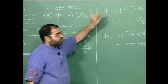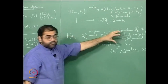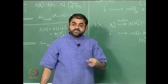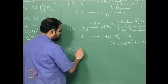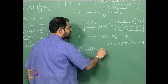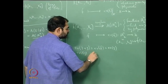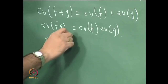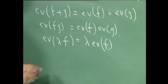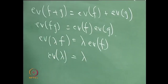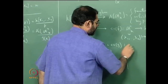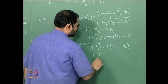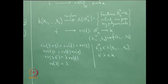These maps are k-algebra homomorphisms satisfying ev(f+g) = ev(f) + ev(g), respecting addition, multiplication, and scalar multiplication, with ev(λ) = λ for every constant polynomial λ.